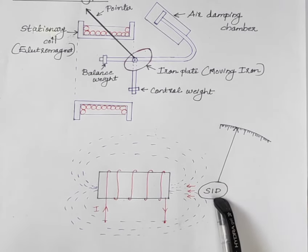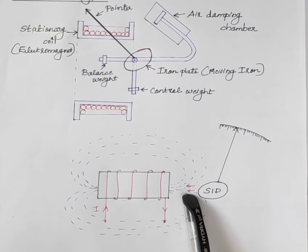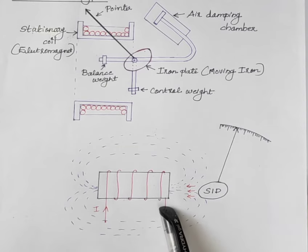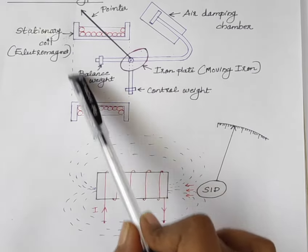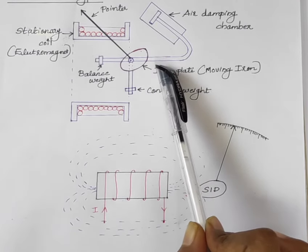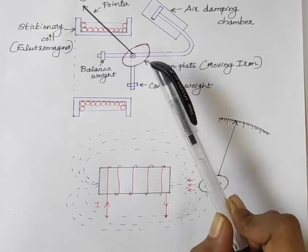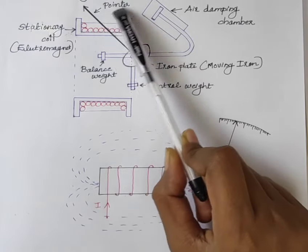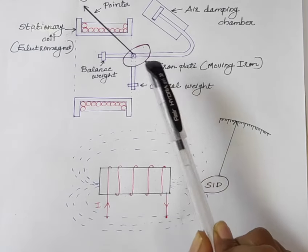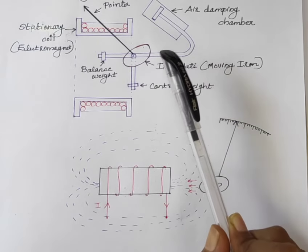This soft iron disc is attached to the moving system. So when the soft iron disc is attracted by the electromagnet, the pointer shows the reading which is proportional to the magnitude of current passing through the stationary coil. This one is the current carrying stationary coil — it acts as an electromagnet and a soft iron disc is placed near to it. When current passes through the coil, it becomes an electromagnet and the iron plate is attracted, and the pointer shows the corresponding reading. The instrument in which the iron plate is attracted from the weaker field towards the stronger field is known as attraction type instrument.